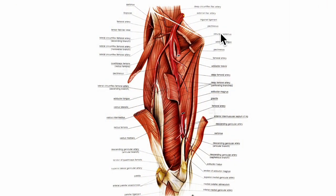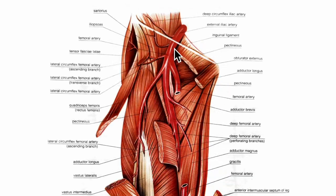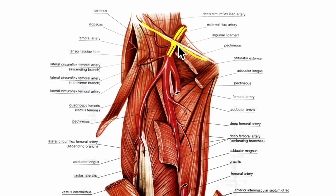This diagram shows the anterior superficial view of the right lower limb showing its arterial system. The femoral artery is the chief artery of the lower limb. Looking at its origin, the femoral artery is a continuation of the external iliac artery and it begins behind the inguinal ligament at its mid-inguinal point.